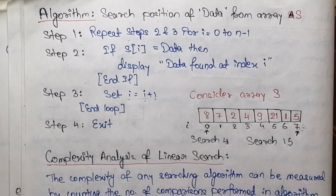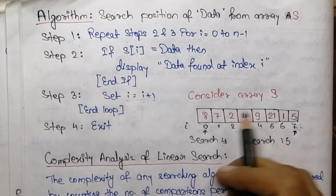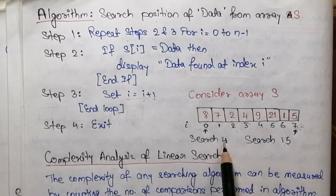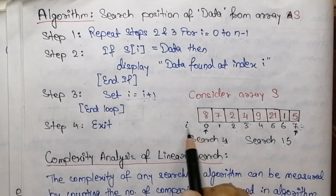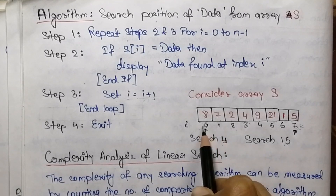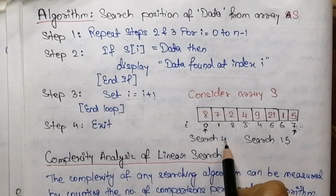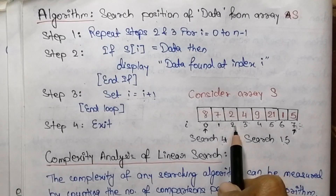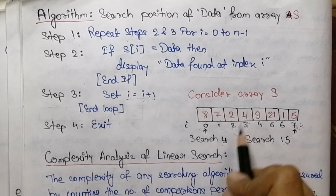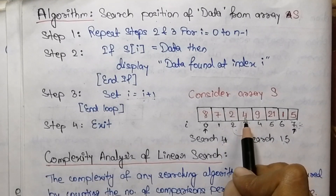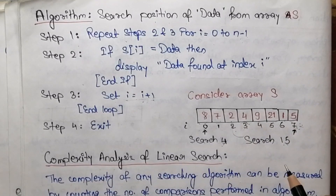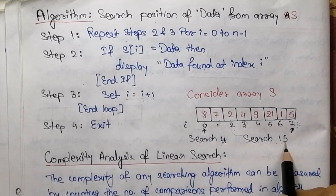Let's understand this with an example. Here is the array S. We need to find the element 4. We compare 4 with the zeroth element 8 — is 8 equal to 4? No. We increment i, then compare 7 with 4 — not equal. We increment again; is 2 equal to 4? No. We increment again — 4 equals 4, true! We found the element and display the message that element 4 is found at index 3.